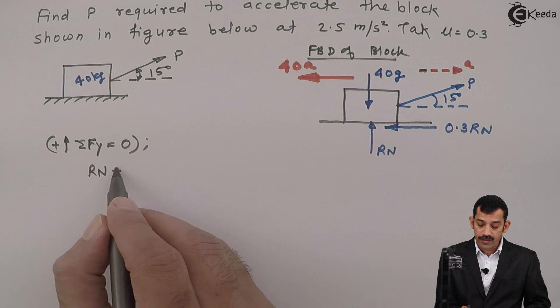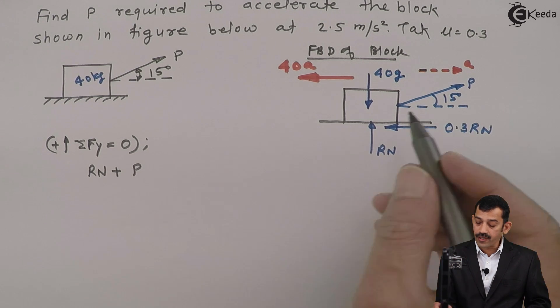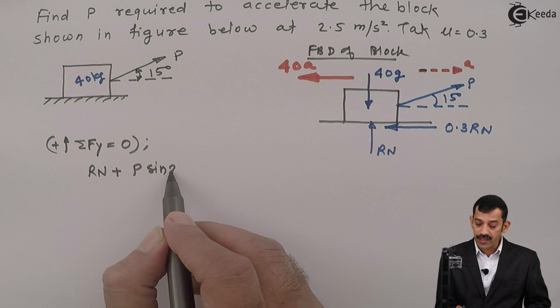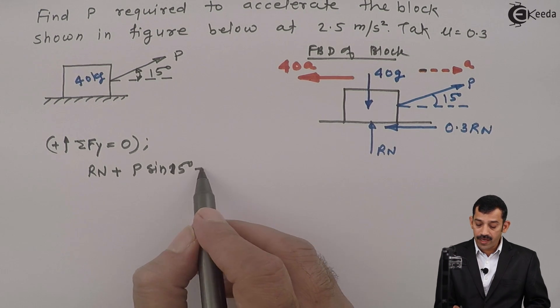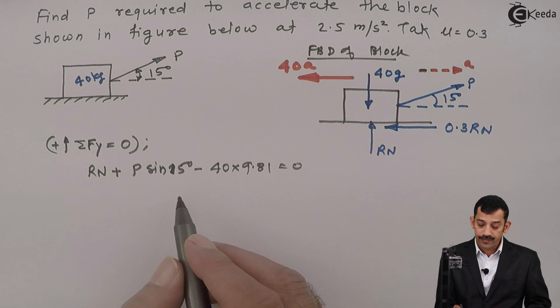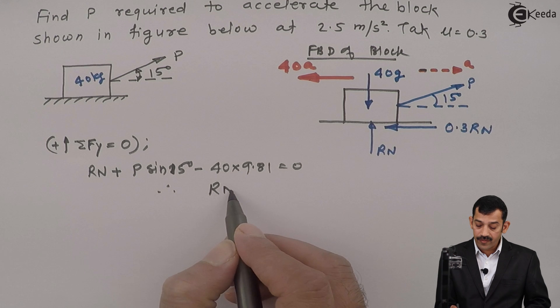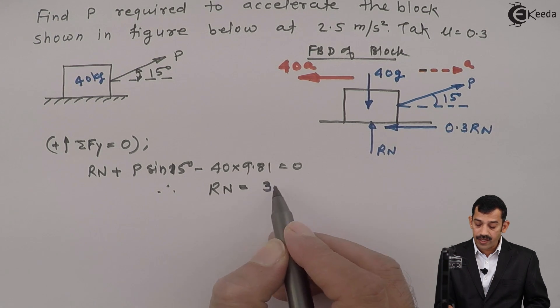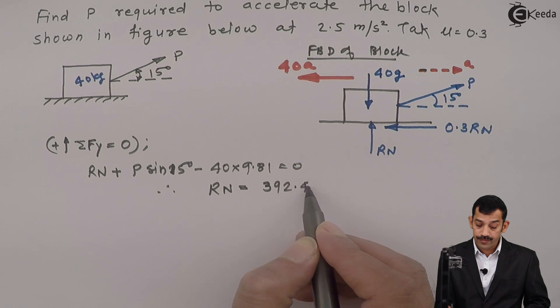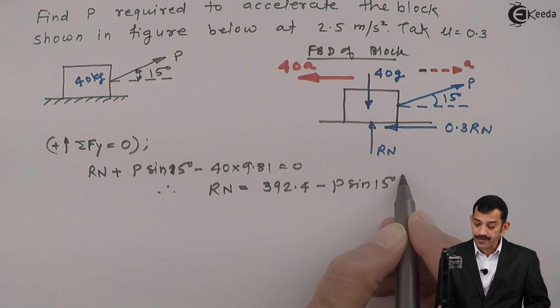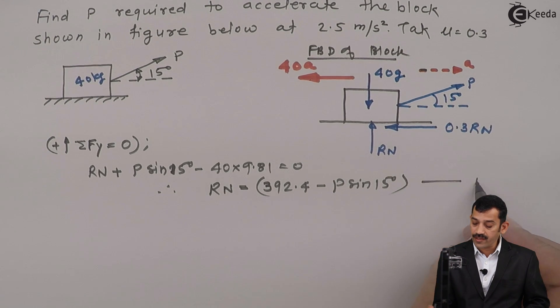Next, the upward component of P: angle with horizontal is given, so vertical component becomes sine of this angle, 15 degrees. Then minus 40g means 9.81 equals 0. Therefore, Rn equals 40 times 9.81 is 392.4 minus P sine 15 degrees. This is the value of Rn, equation number 1.